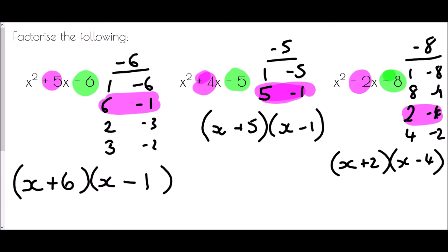In all of these examples we had a negative value at the end, and what you'll notice is that we always end up with one positive and one negative in the brackets. That's because the two values need to multiply together to make a negative number, which requires one positive and one negative.